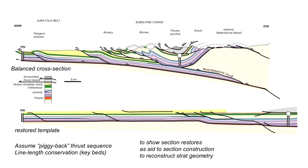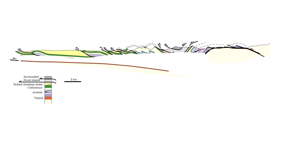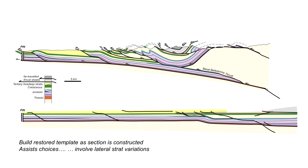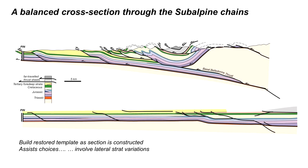The other important assumption is that of the piggyback thrust sequence. This allowed us to use the restoration of the Jura fold belt to establish the underpinnings of the subalpine chains and constrain the cross-section as we proceeded. Starting from surface geology and structures observed at the earth's surface, and assuming piggyback thrusting, we built the restored template as we went. By restoring the cross-section onto a template as it is drawn, we can use information from the restoration to draw further parts of the cross-section and involve lateral stratigraphic variations in a dynamic interpretation — illustrating how synchronous construction of restored templates can inform the construction of a balanced cross-section in a fold and thrust belt.